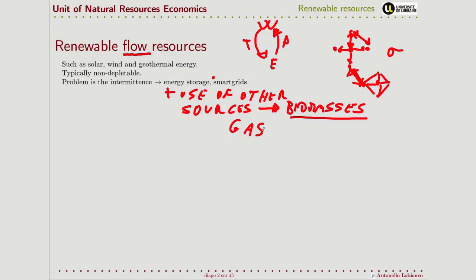The problem in France is that something that doesn't work very well with this scheme is nuclear. To change the supply of electricity from nuclear plants, you need to wait a long time — it is not done instantaneously. And so nuclear resources don't go very well with renewables.